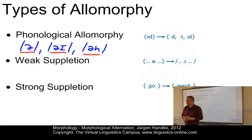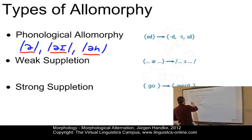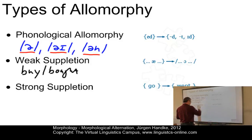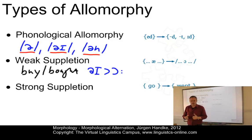Weak suppletive allomorphy is a kind of morphological alternation where the allomorphs exhibit some phonological similarity, but their relationship cannot be described by a phonological rule. In English we have examples like 'buy' and 'bought' — phonologically you have this 'I' becoming 'or', but that's nothing completely regular, so we cannot set up a phonological rule. Or alternatively 'meet' and 'met'. This is irregular. However, there is some sort of similarity.